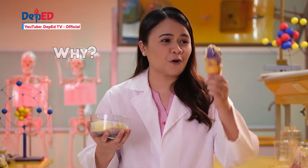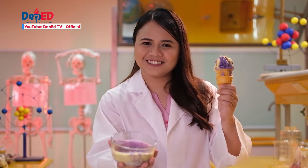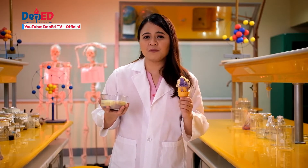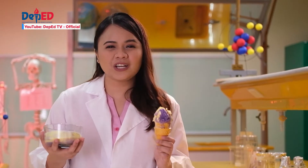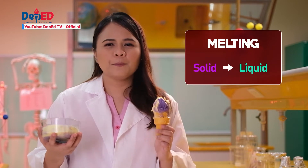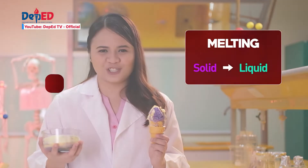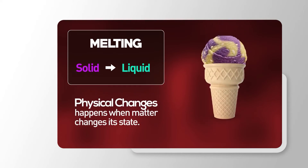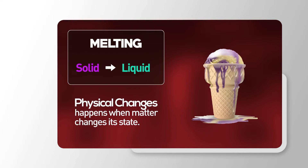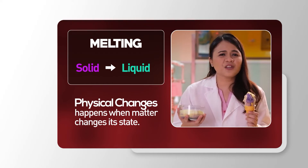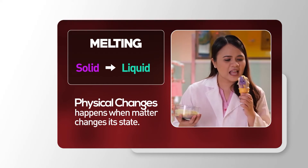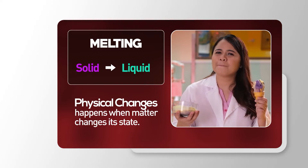Because it may turn from this to this. Notice how this ice cream changes its appearance as time goes by. In science, we call this melting. Melting is an example of physical change. Physical changes happen when matter changes its state, like what happened to our ice cream. From solid, it turned into liquid. Although it changes its state, it's still the same ice cream with the same flavor. Mmm, yum!